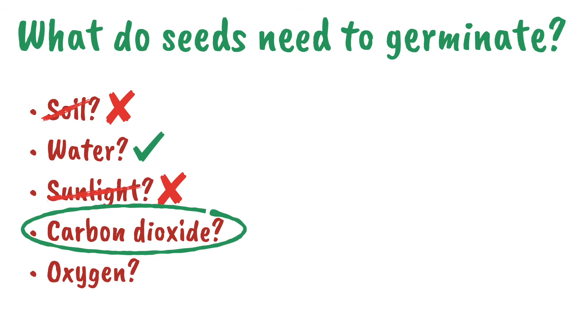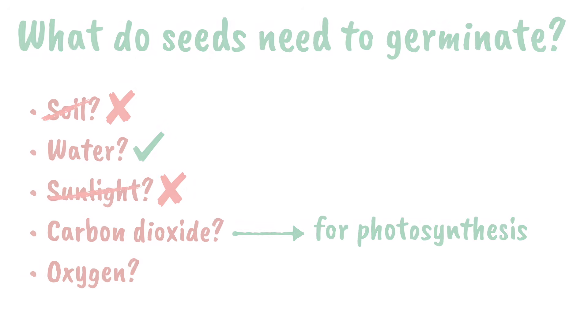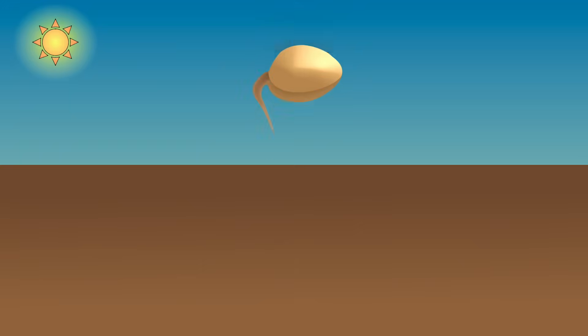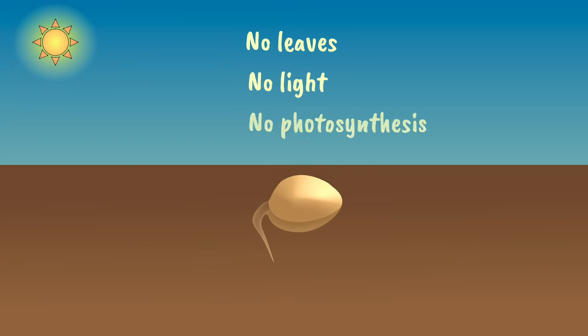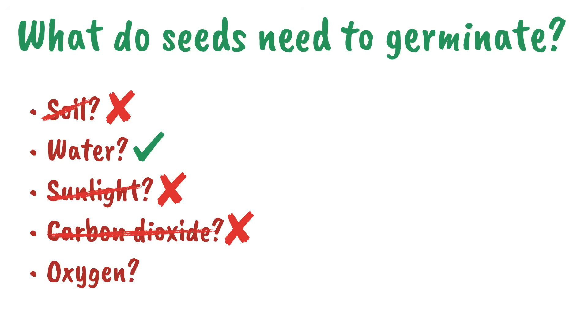Next, carbon dioxide. Well, we know this is required for photosynthesis. But think again about our soon-to-germinate seed. There are no leaves and there's often no light. So, no photosynthesis. So, no, carbon dioxide is not required for germination.